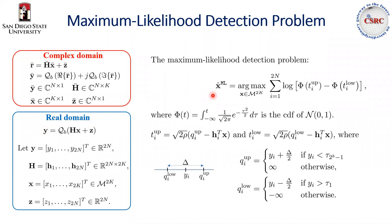There are two challenges here. One is about the feasible set, which is a discrete set and its size scales exponentially, so an exhaustive search is very expensive. And second, it is about the objective function. The objective function doesn't have a closed form expression, so it complicates the evaluation of the objective function.